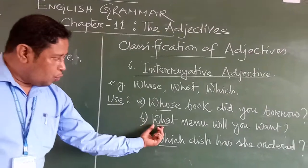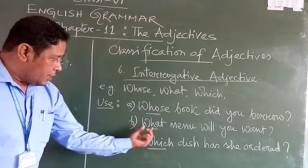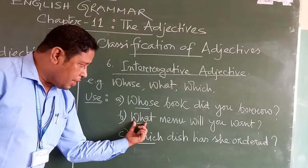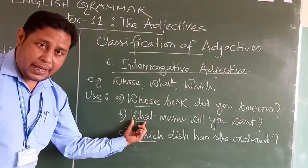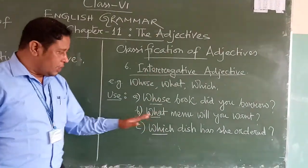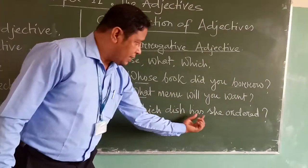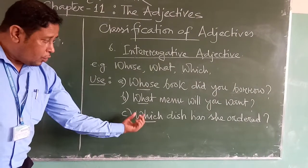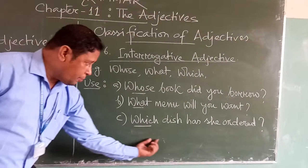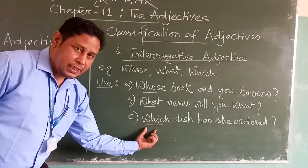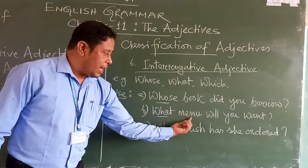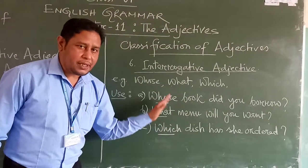In the second example: what menu will you want? Here the adjective 'what' describes the noun 'menu,' and it is followed by a noun. That's why it is an interrogative adjective. There is a certain difference between interrogative adjective and interrogative pronoun, which I will explain in my next video. In the third example: which dish has she ordered? The adjective 'which' is followed by the noun 'dish.' Every interrogative adjective is followed by one noun just after it. This is the rule for interrogative adjective.